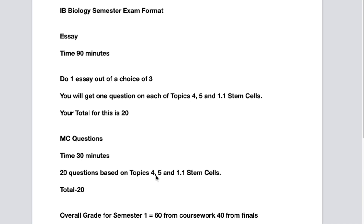Topic 4: ecology. Topic 5: classification, evolution, and the little bit of Topic 1.1 that we did, which is stem cells. Also remember, we did a little bit of Topic 3 with somatic cell nuclear transfer and with the use of data to construct cladograms. Those were two sections of Topic 3 that were relevant and we brought them into our work this semester. So all of that will contribute to your 20 questions.